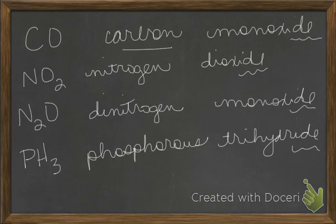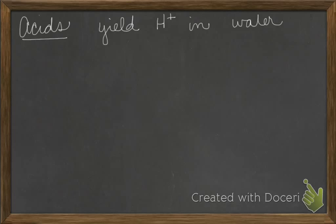The last group of compounds we need to look at naming is a special group of compounds known as acids. How can you identify a compound that is an acid? Acids will yield hydrogen ions in water. And that's our definition for now. As we delve deeper into chemistry, we can expand on that definition. But for now, if it starts with a hydrogen, it's going to be an acid. Does that mean every compound that contains hydrogen is an acid? Well, not necessarily.